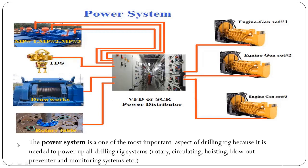The power system is one of the most important aspects of a drilling rig, because it is needed to power all drilling rig systems including the rotary system, circulating system, hoisting system, blowout prevention system, and monitoring system. Depending on the rig horsepower, there will be a number of engine generator sets available on the rig. In this picture, there are three engine generator sets.